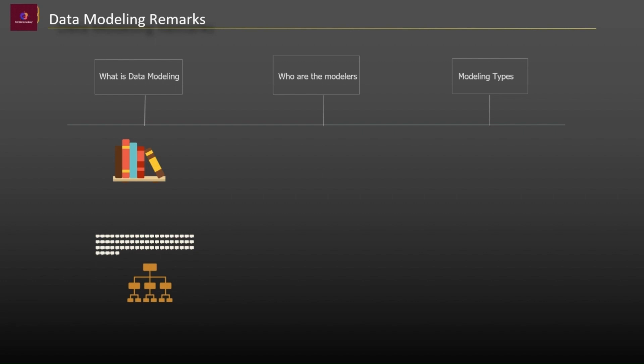in which phase data modeling takes place? Traditionally, data models have been built during the analysis and design phases of the project to ensure that all the requirements of new applications are fully understood. The process starts by collecting business requirements and rules from stakeholders and end users. These business rules are then translated into data structures to formulate a concrete database design.